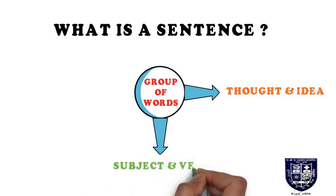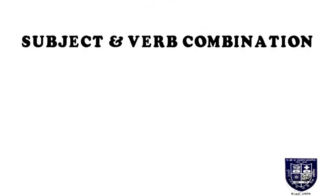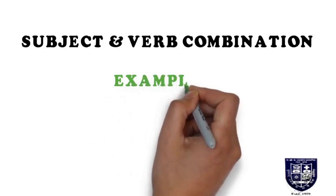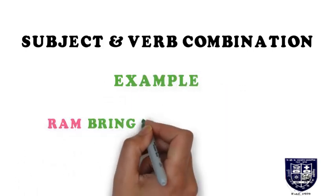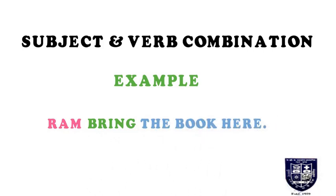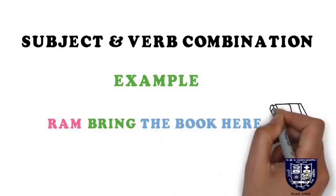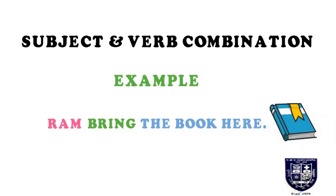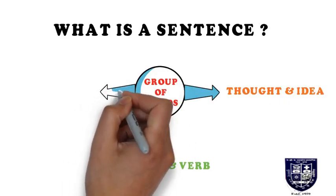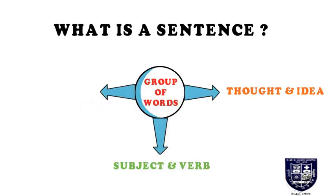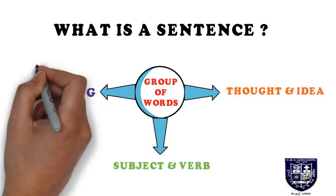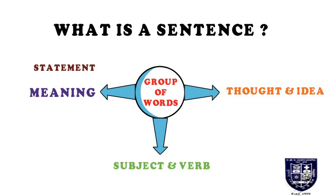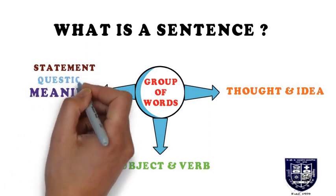The second characteristic of sentences is the subject and verb combination. This plays a very important role. For example, in the statement 'bring the book here,' the verb is 'bring.' The subject here is raw, and the verb is 'bring.'